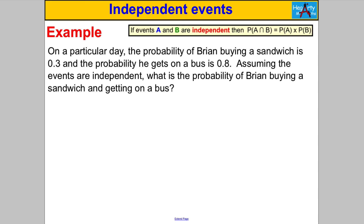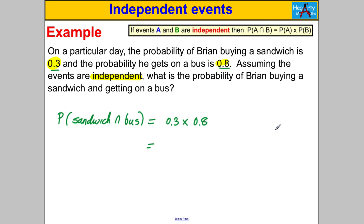Pause the video and have a go. On a particular day the probability of Brian buying a sandwich is 0.3 and the probability he gets on the bus is 0.8. Assuming the events are independent, what is the probability of Brian buying a sandwich and getting on a bus? We multiply the probabilities: 0.3 × 0.8. Since 3 × 8 = 24, then 0.3 × 0.8 = 0.24. So the answer is 0.24.